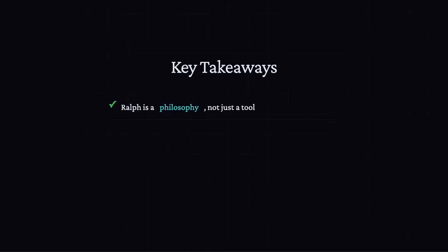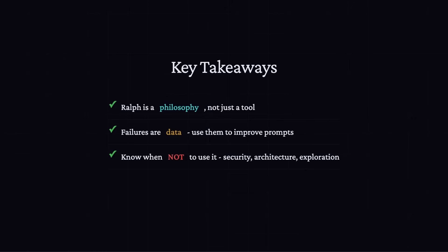Here are the main takeaways. Rough is a philosophy, not just a tool — it changes how you think about working with AI. You stop directing and start defining outcomes. Second, failures are data: when Rough screws up, it's telling you something about your prompt — don't blame the AI, fix the specs. Know when not to use it: security, architecture, and exploration still need human judgment. And for the love of your wallet, set max iterations.